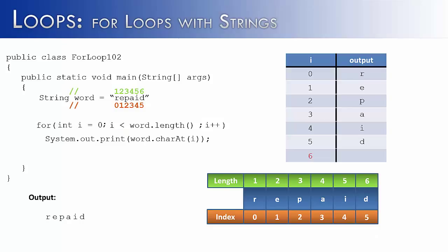To do this with substring instead of charAt, it's just a small change: word.substring(i, i+1). The second parameter of substring is exclusive, always 1 further than where you want to end. So word.substring(i, i+1) also meets the goal of printing out the word by visiting each individual character.